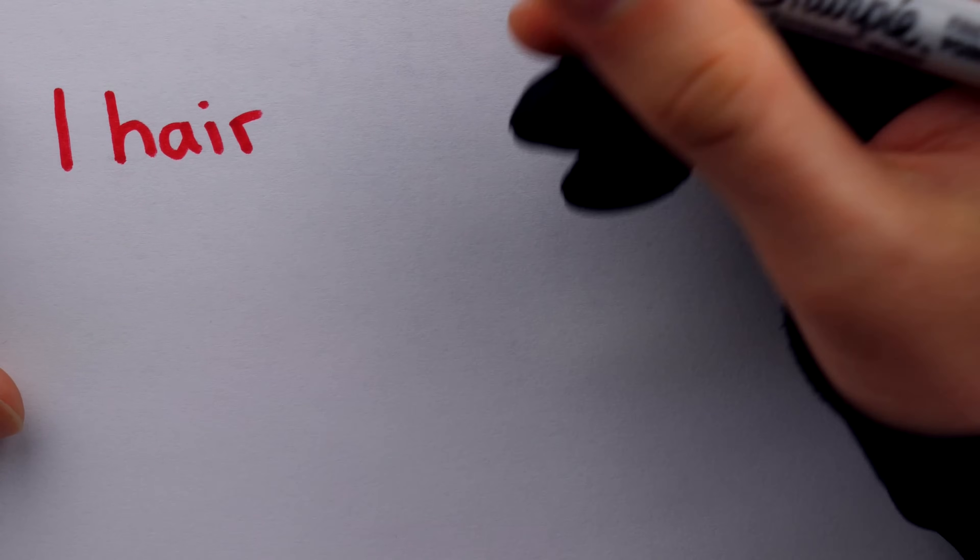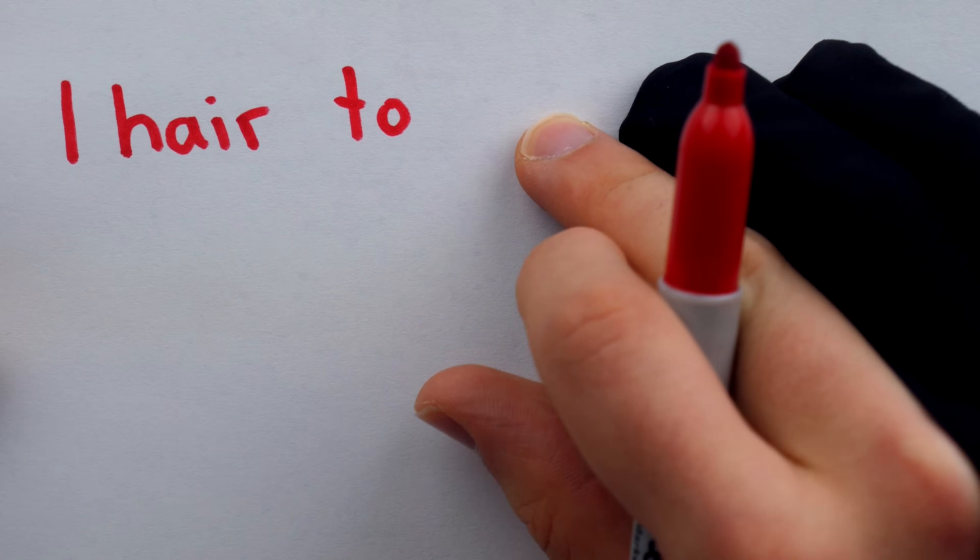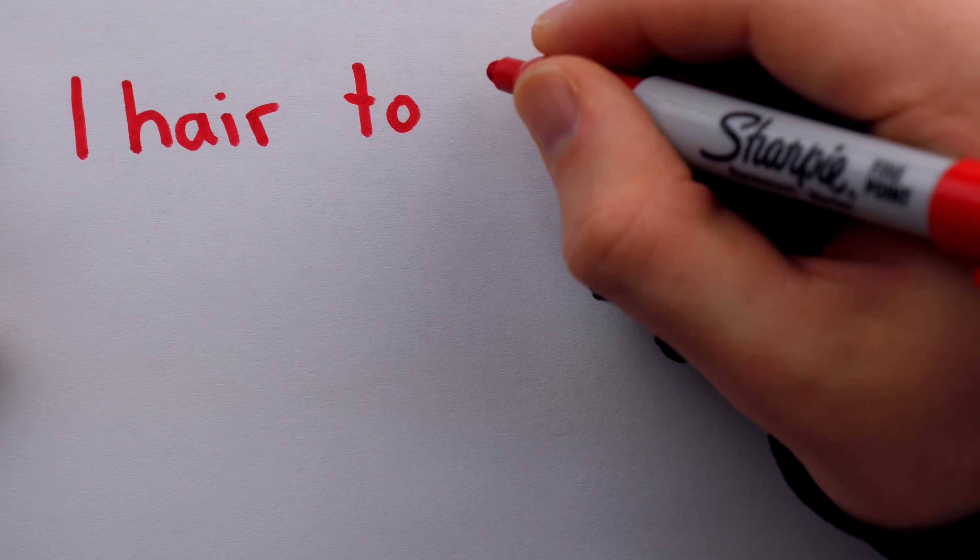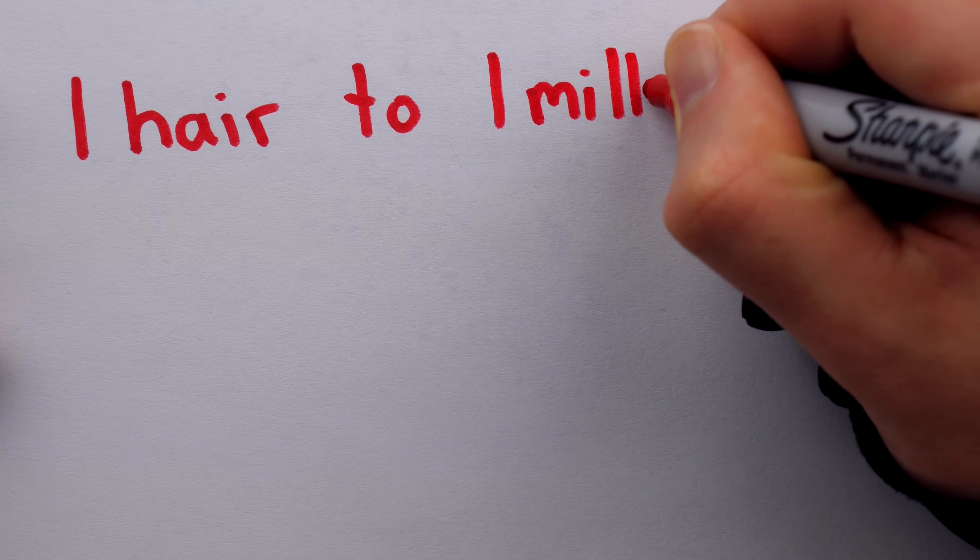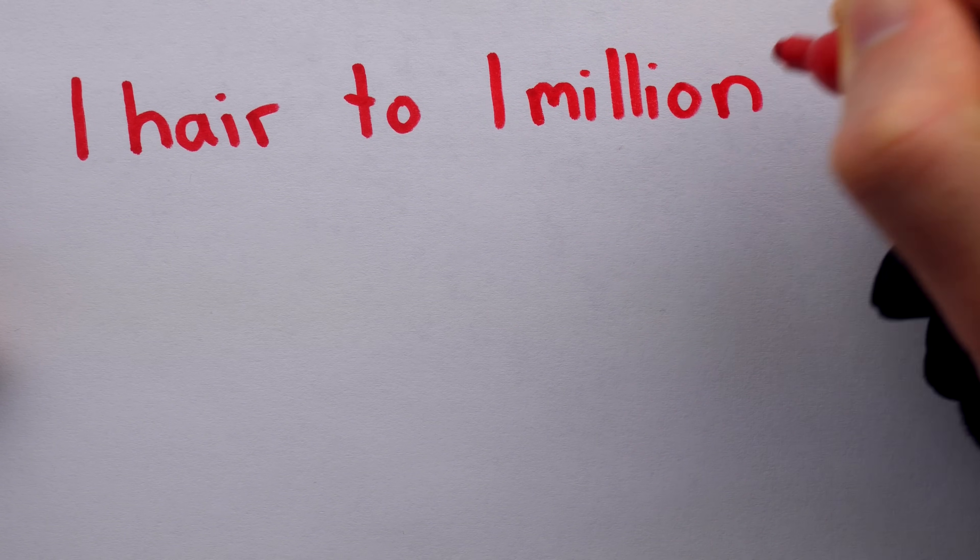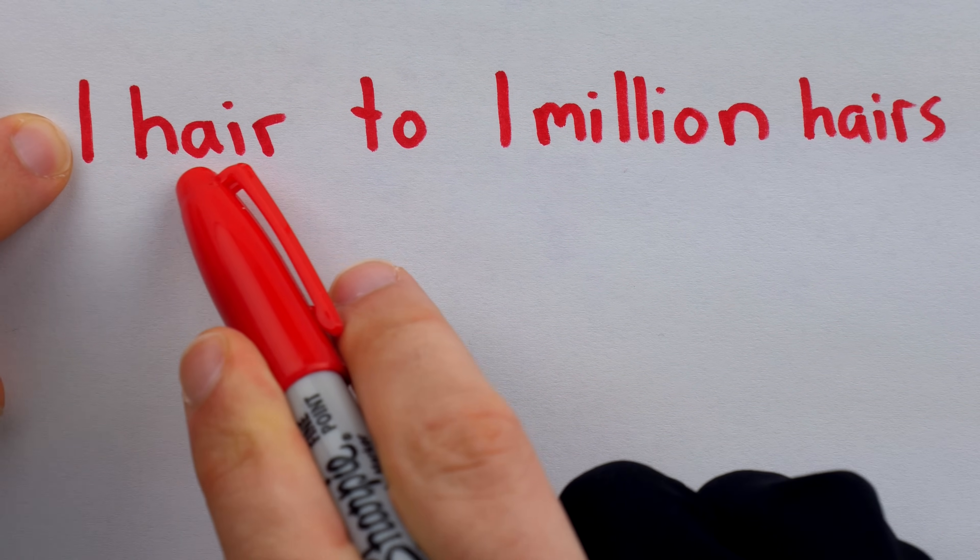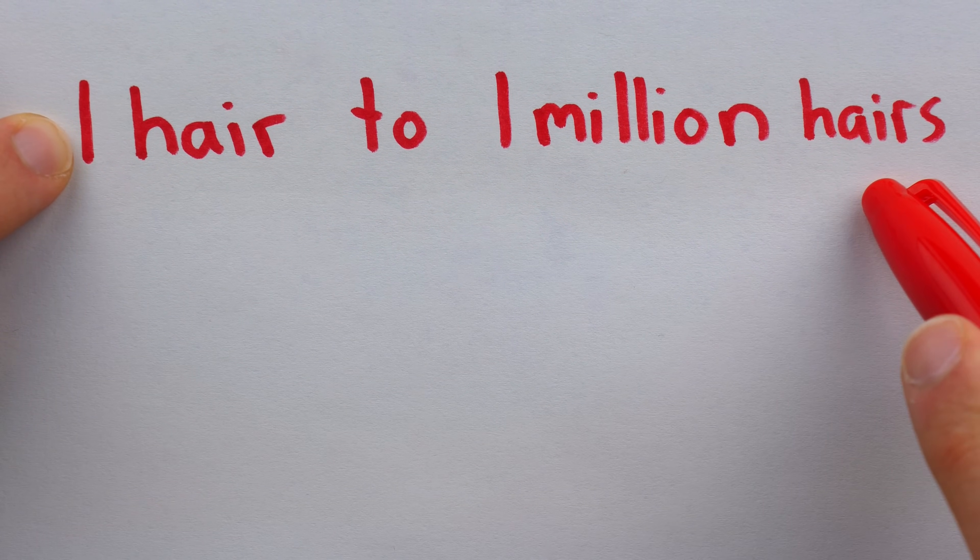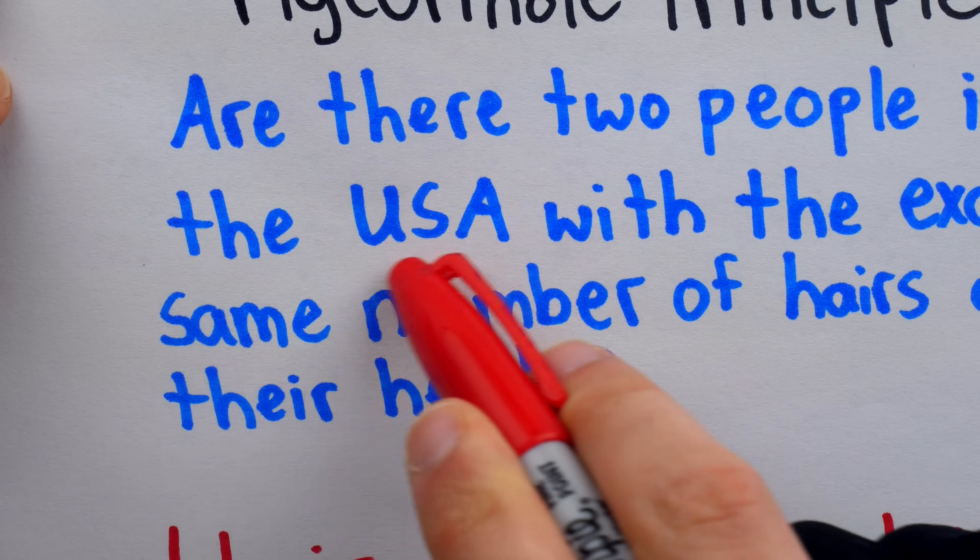Let's say we exclude bald people, so then the possible numbers of hairs on someone's head is between one hair and a high end for the average number of hairs on someone's head is 150,000. So just to be super safe, let's go from one hair all the way up to a million.